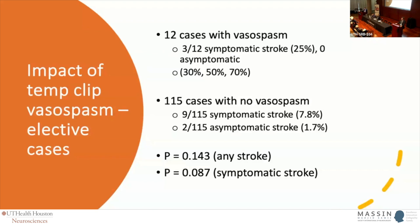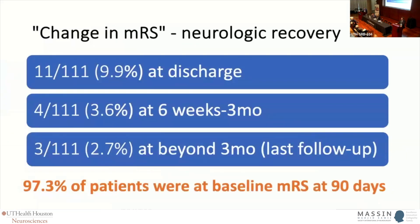We tried to untangle this and found that about 25% of patients who had symptomatic vasospasm — three patients in total — also had an ischemic event that we felt was specifically related to that vasospasm, very distal in the territory and unrelated to any perforator or branch that could have been affected by the primary clip.